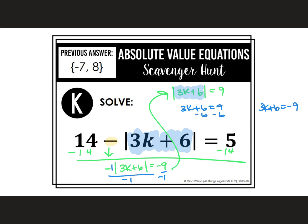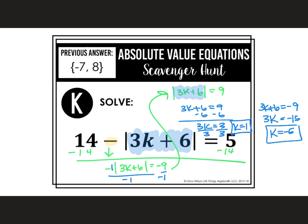Subtracting 6 and dividing by 3 gives K equals 1 for the first equation. For the second, subtracting 6 and dividing by 3 gives K equals negative 5. So the two answers are {-5, 1}. I hope this helps as you work your way through the scavenger hunt.